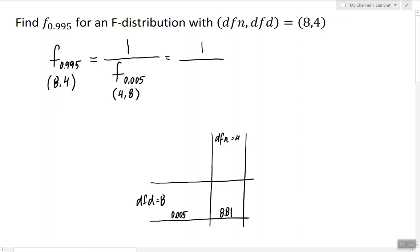So that's the number which goes here in the denominator. So we still have to find the reciprocal of that number. So dividing 1 by 8.81 gives us 0.1135, which is the answer to the original question.